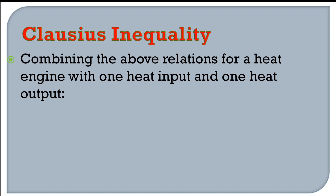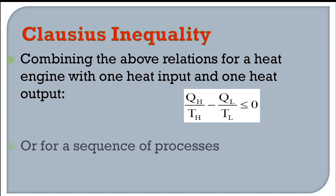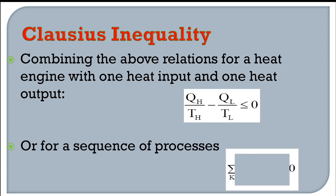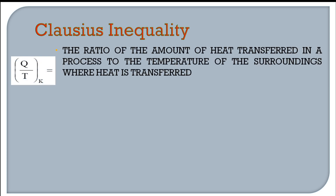Combining both cases — QH/TH = QL/TL for reversible and QH/TH < QL/TL for irreversible — for a heat engine with single heat input and output, he established: QH/TH − QL/TL ≤ 0. For a sequence of processes this generalizes to the summation Σ(Q/T) ≤ 0, known as the Clausius inequality.